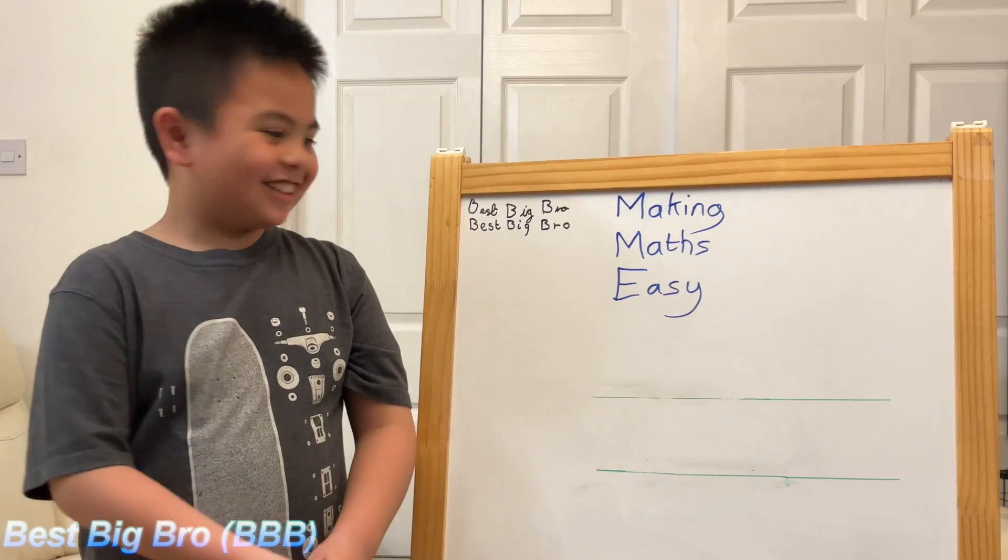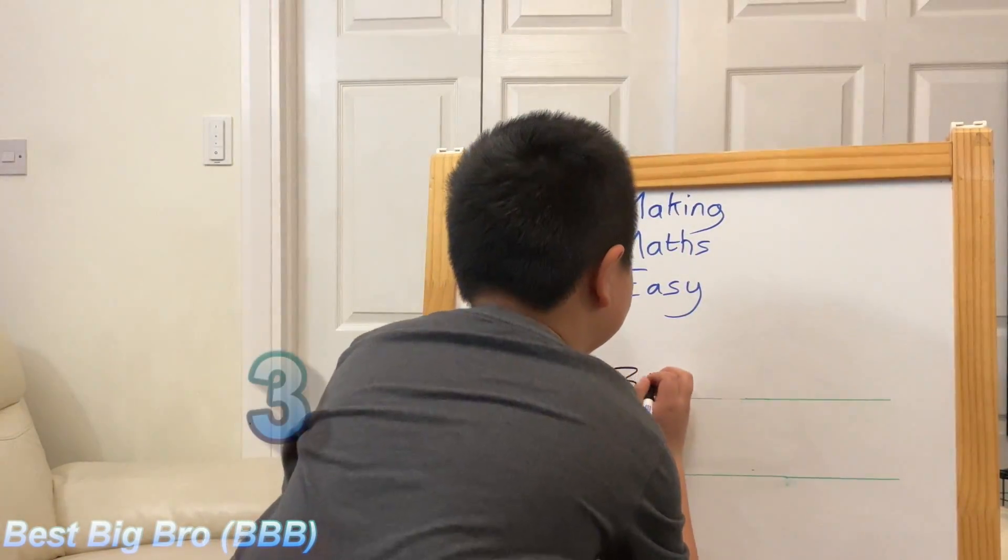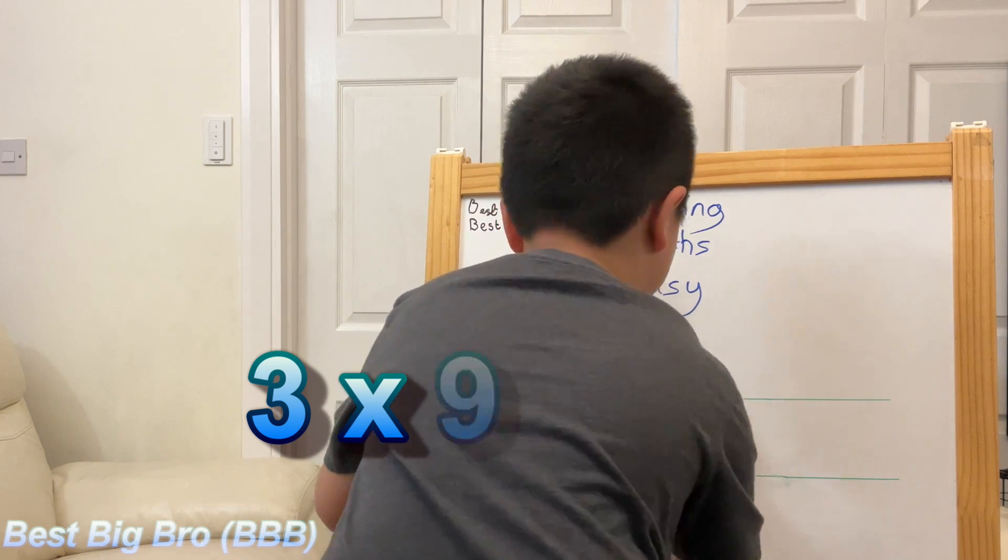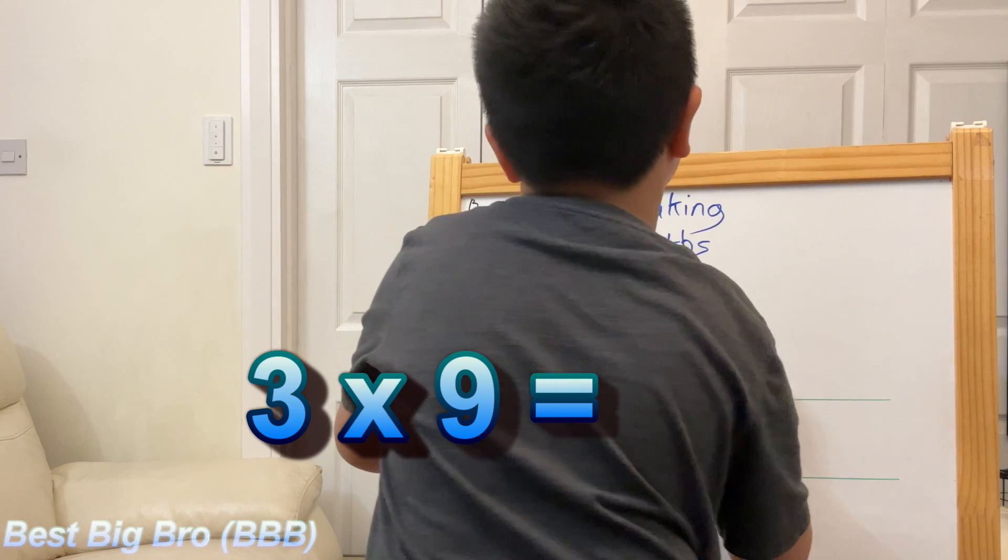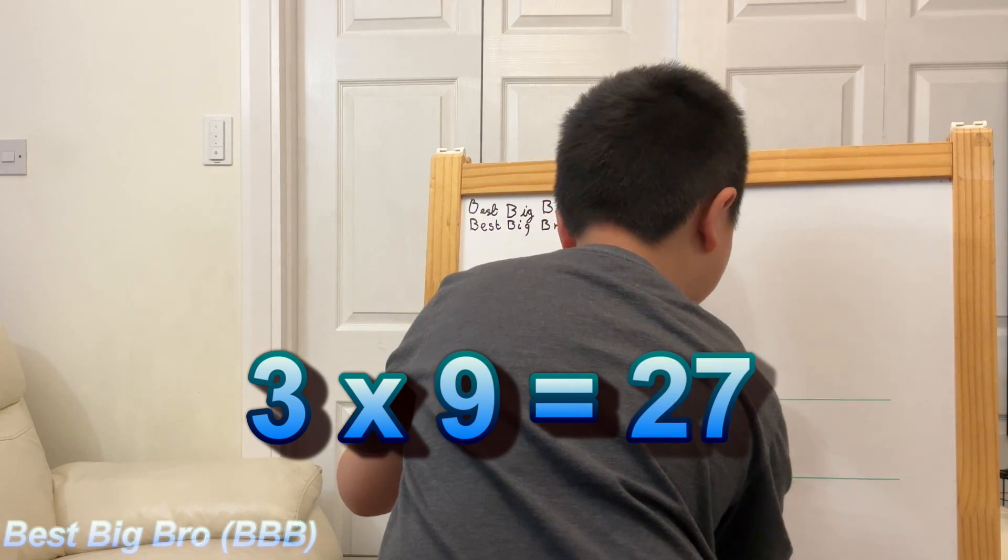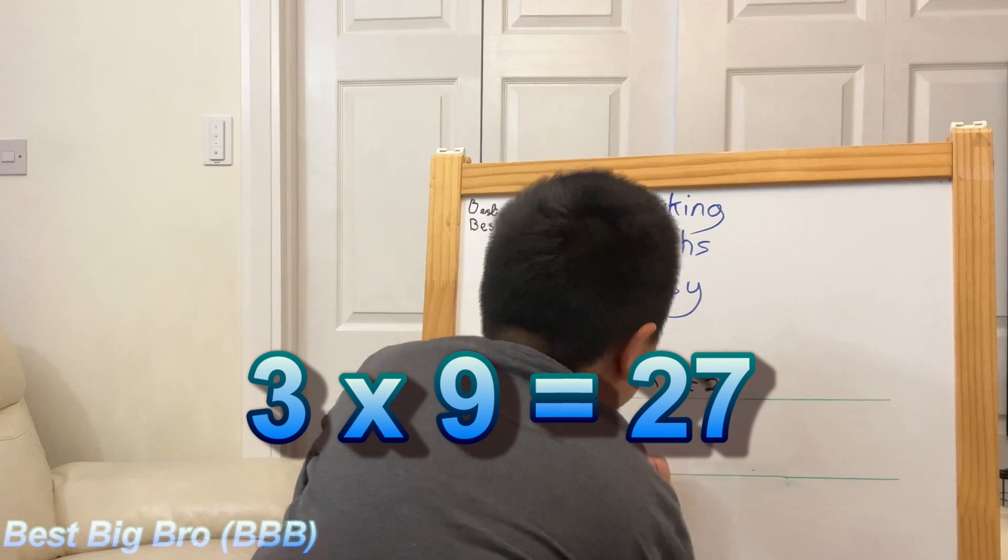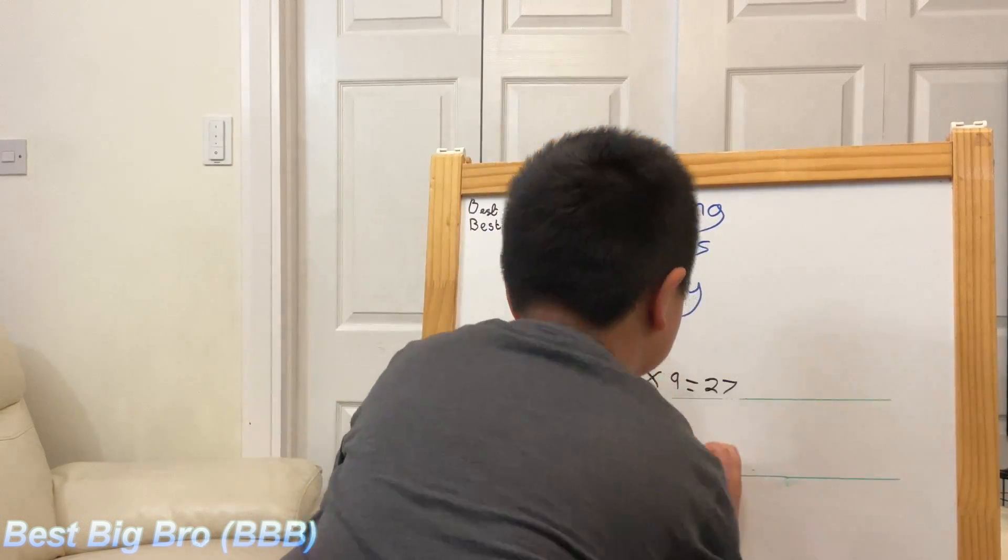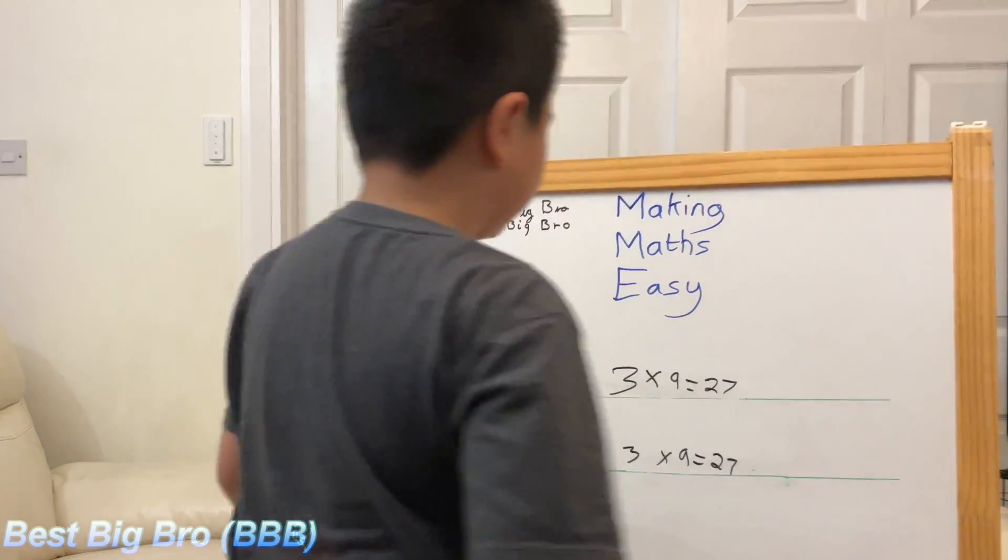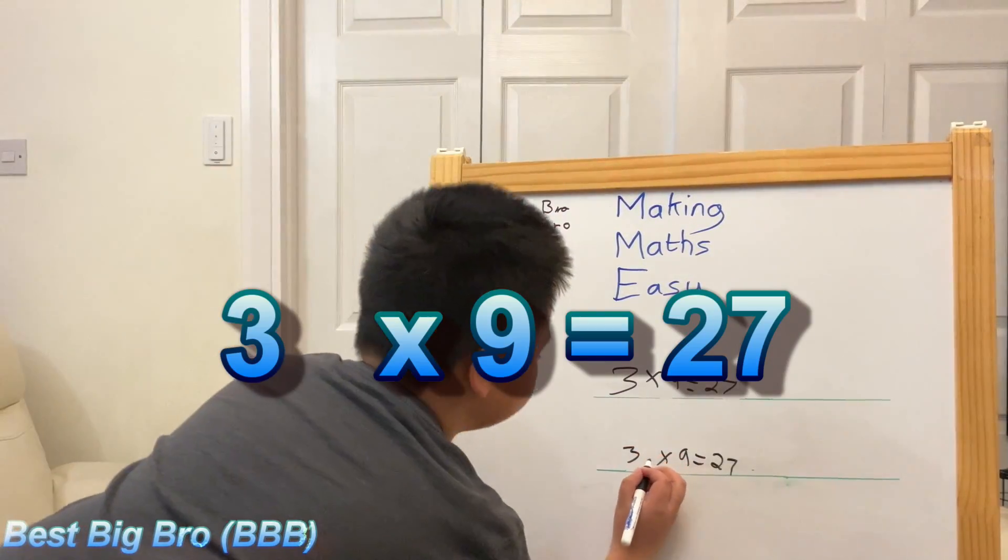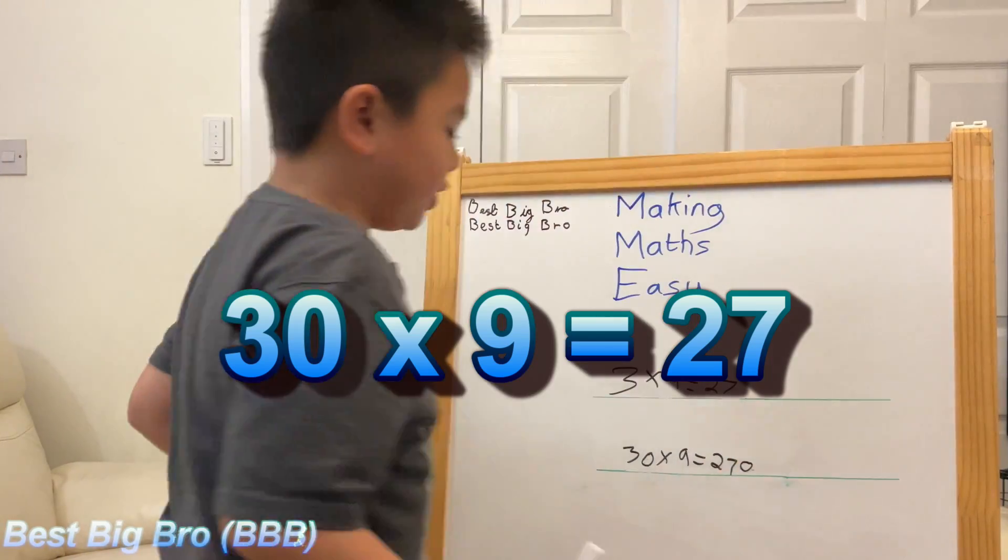Can you show me how you work that out? So, 3 times 9 equals 27. So I've got to do it again, but I've got to leave it back. So you need to add a zero to make it 30 and you need to add another zero to make it 270.